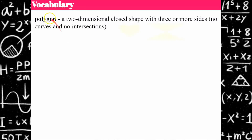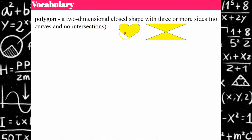Here's some vocabulary that's important before we start learning. A polygon is a two-dimensional closed shape with three or more sides, with no curves and no intersections on their sides. A heart is not a polygon because it has curves, and a composite figure made up of two triangles is not a polygon because of the point of intersection.